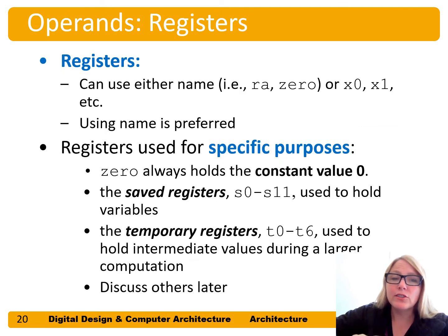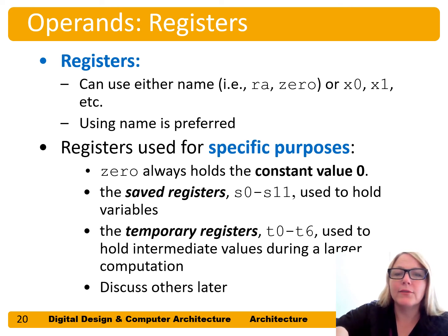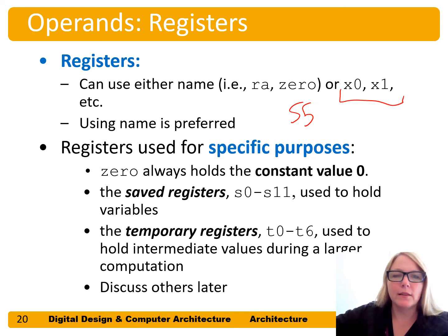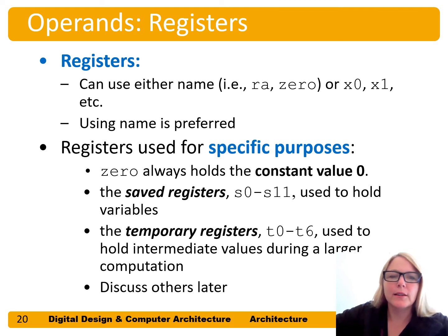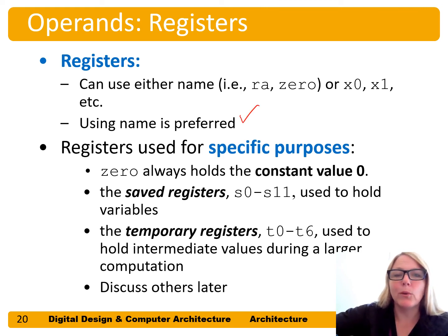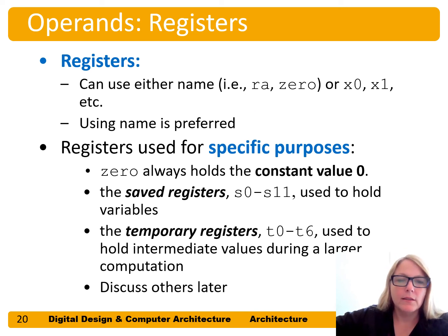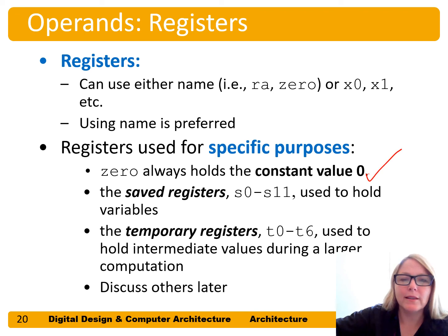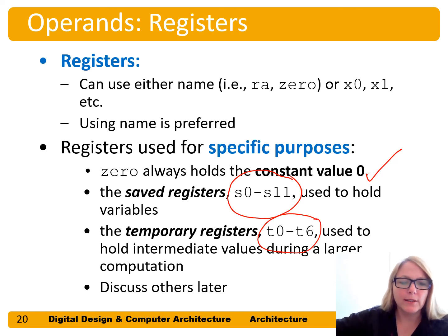Registers can use either the name — like zero, s0, or s5 — or the number preceded by x, like x0 or x1. Using the name is preferred because it gives us information about what that register is conventionally used for. For example, zero always has the value zero, saved registers s0 to s11 hold variables, and the temporary registers hold intermediate values.